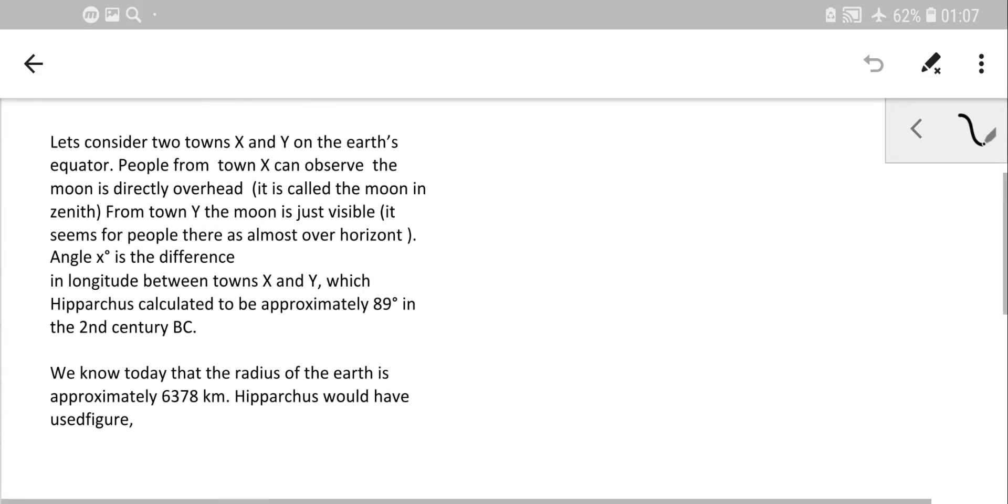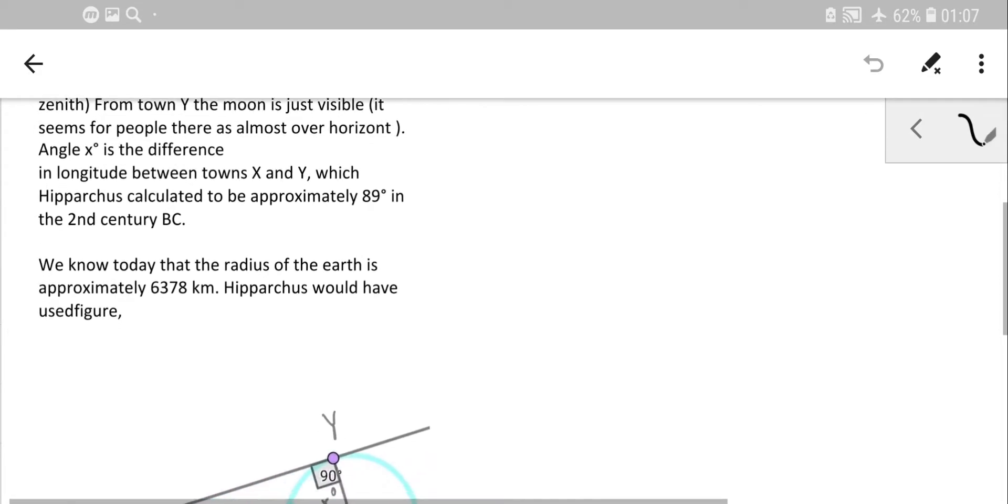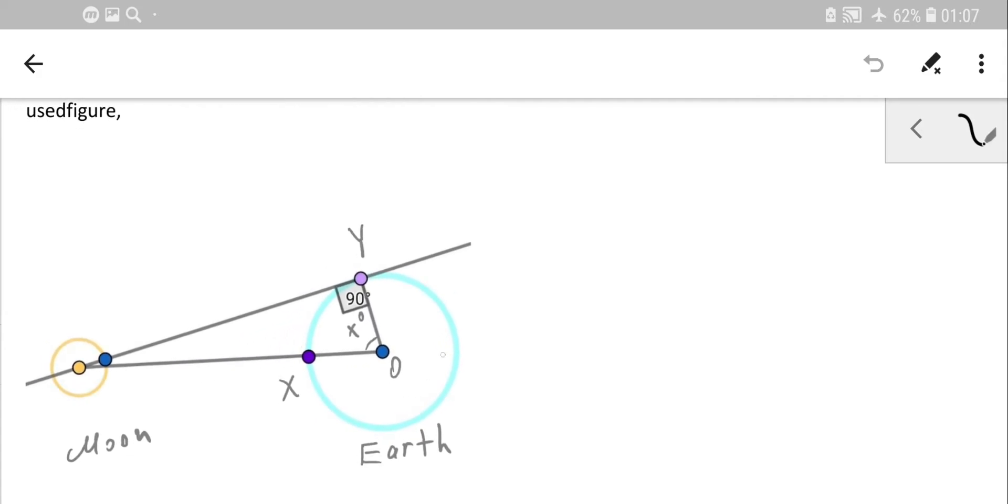Consider two towns X and Y on the Earth's equator. This is the top view—the Earth is round and blue, and here is the moon. In reality, if you take Earth as a basketball, the moon would be like a tennis ball several meters away.